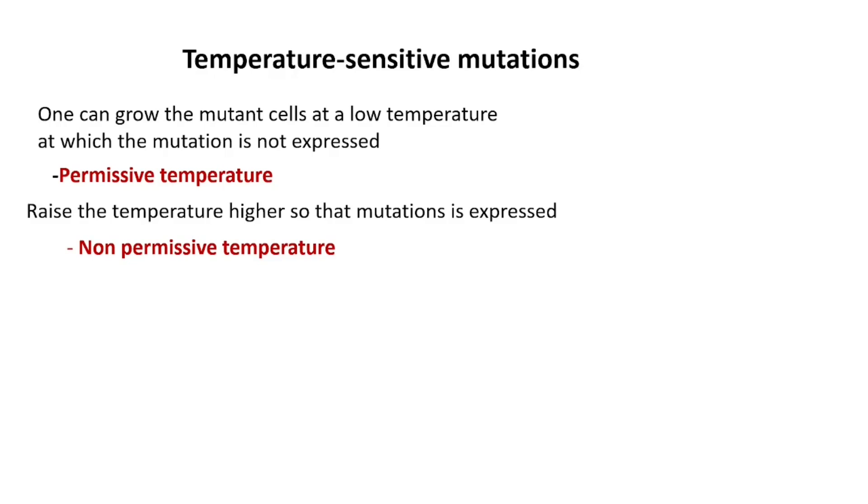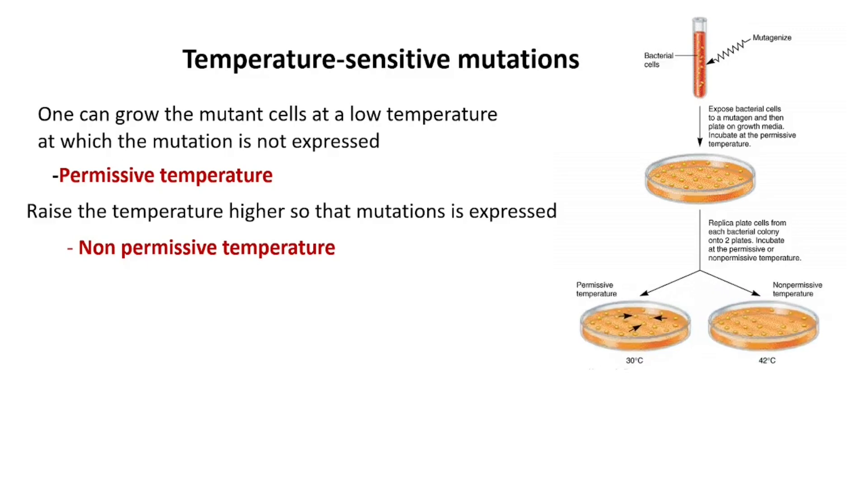To isolate such mutants, take a bacterial culture and expose it to a mutagen and then plate onto a growth media. Incubate at permissive temperature. After incubation, replica plate the cells from each bacterial colony on two plates. Incubate at permissive and non-permissive temperatures. Arrows indicate temperature-sensitive mutants that fail to grow at non-permissive temperature. Pick up the temperature-sensitive mutant colonies from the plate and test their ability to replicate their DNA at non-permissive temperature.